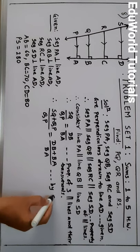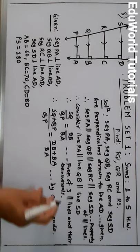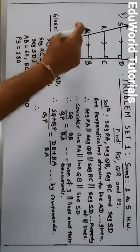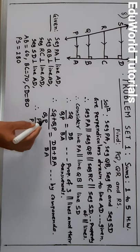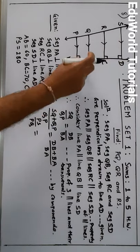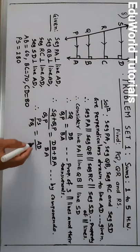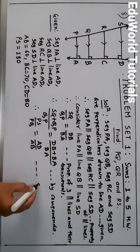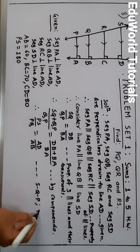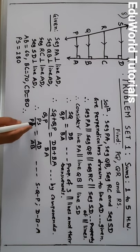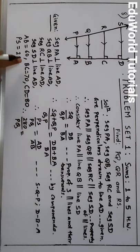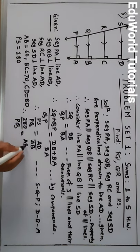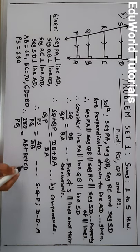By componendo, SQ plus QP gives SP. So PS upon PQ is equal to AD upon AB. PS is 280. AD can be obtained by adding AB plus BC plus CD. So: 280 upon PQ equals (AB + BC + CD) upon AB.